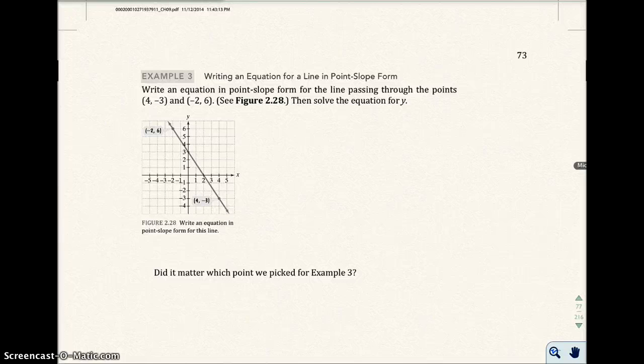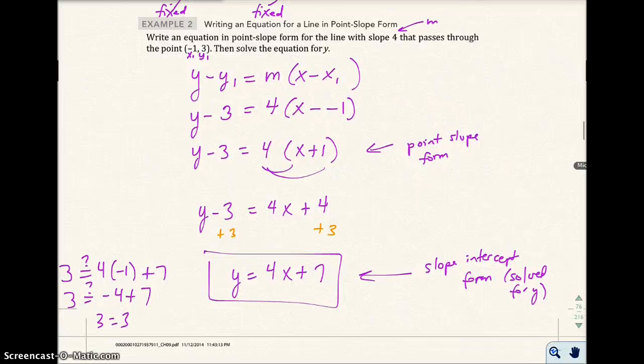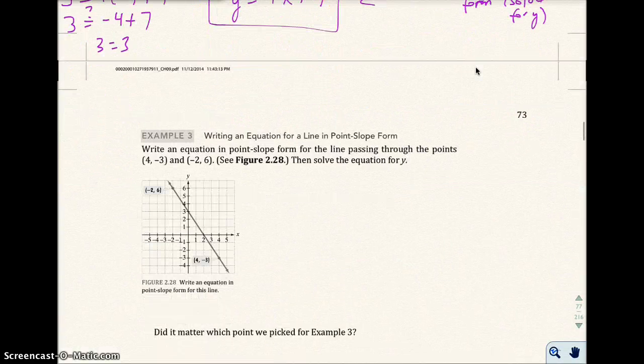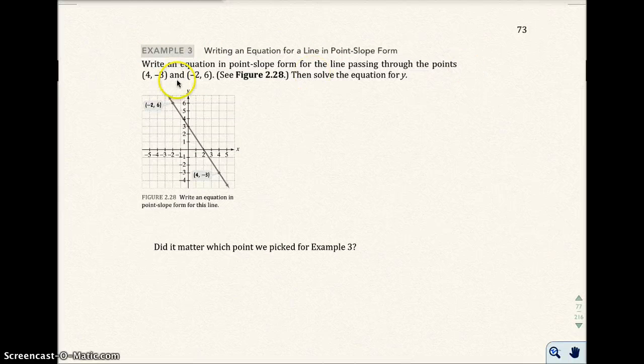Now this problem is different from example 2 that we just finished in the last video because they gave me a slope in example 2. They said slope was 4 and they gave me a point. Now in this example 3, they don't give me a slope. All I do is give me 2 points. Remember, we can find slope if we're given 2 points.